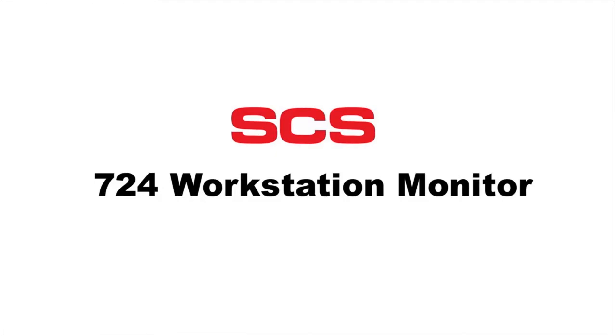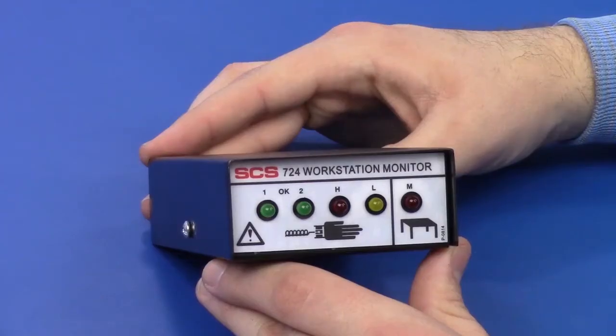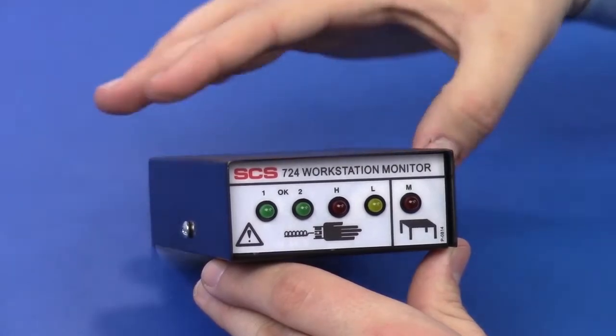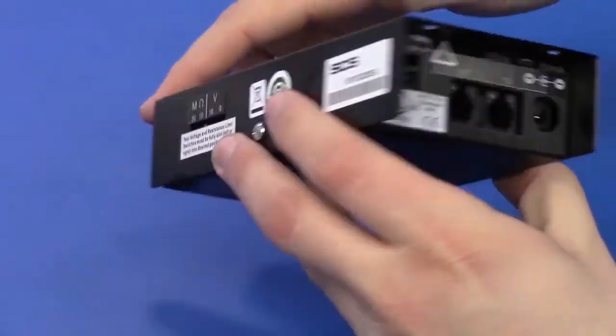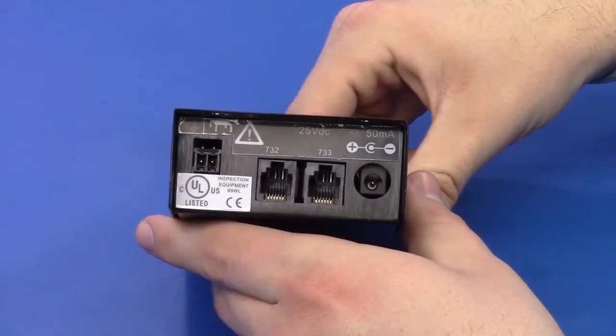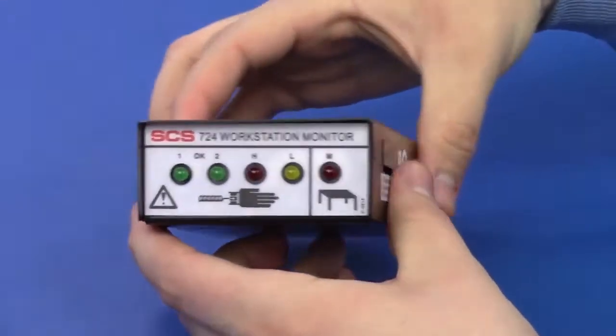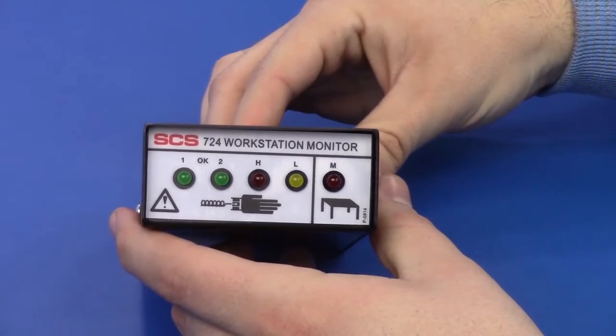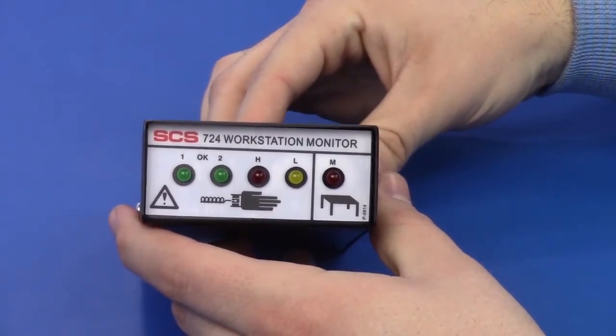The SCS724 Workstation Monitor provides coverage to an ESD protective workstation. It continuously monitors the resistance of two operators and one work surface mat. The SCS724 Workstation Monitor meets ANSI ESD S2020 in accordance with ESD TR12-01.